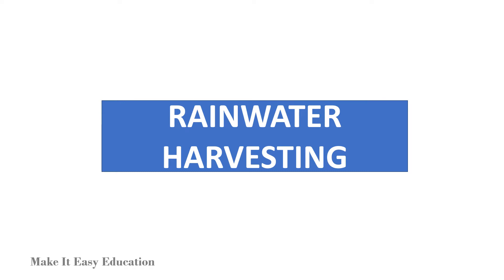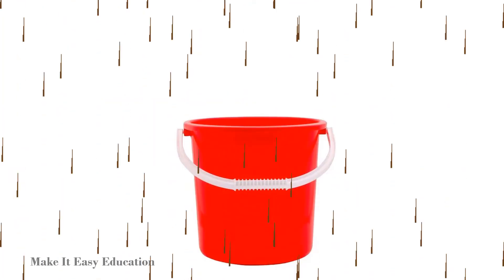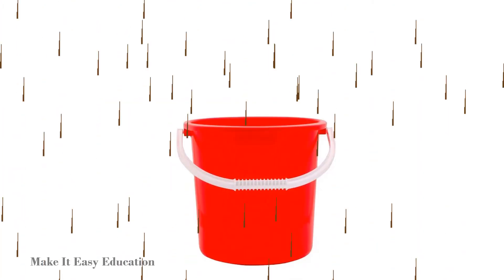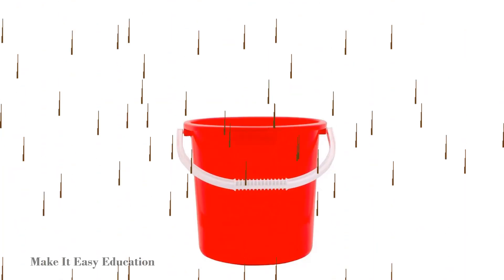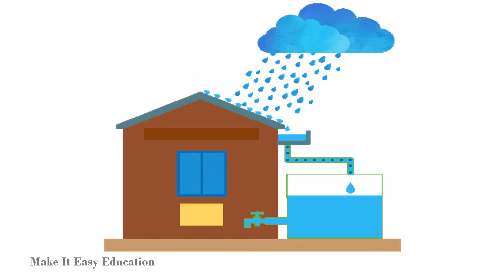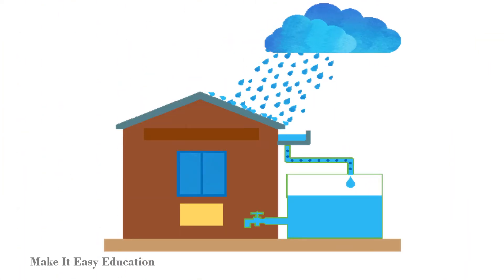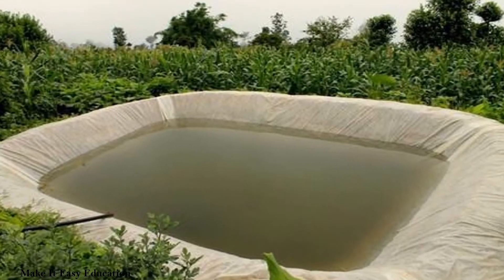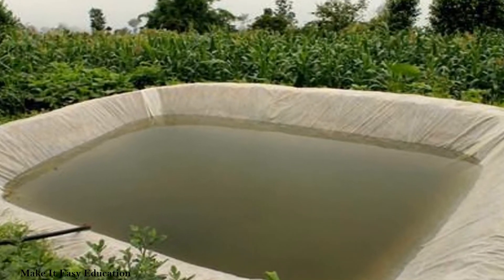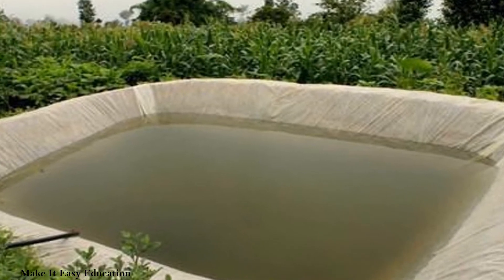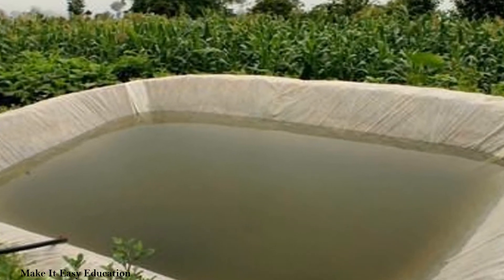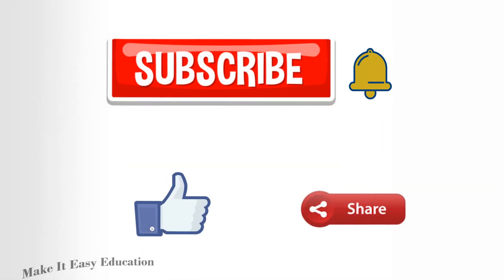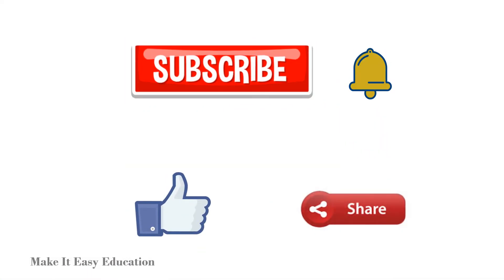Direct collection and use of rain water is called rain water harvesting. For example, collecting rain water from the rooftop of houses or buildings, and collecting flowing rain water by constructing ponds with a bund.